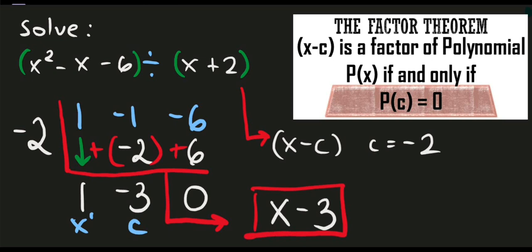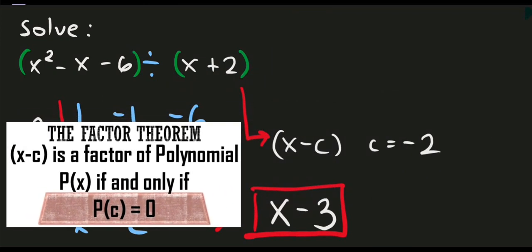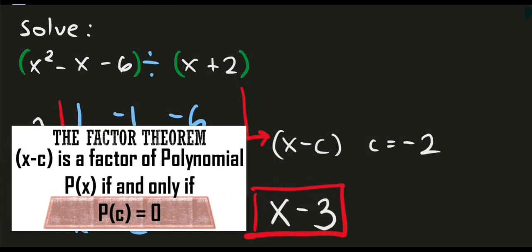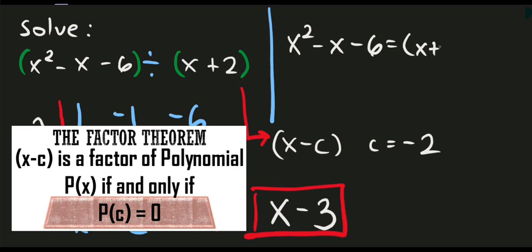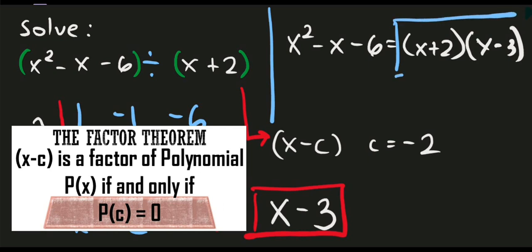Since we want to understand the concept of factor: if the quotient for this given problem is x minus 3, and we want to rewrite the original problem, x squared minus x minus 6 is actually equals to x plus 2, our divisor, times our quotient, which is x minus 3. Therefore, this set of values will serve as the factors of our original problem.